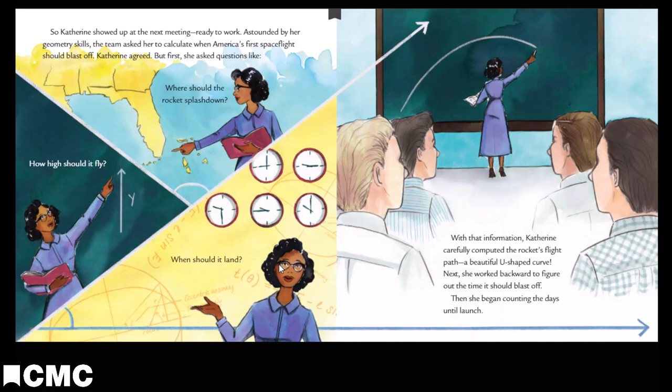Astounded by her geometry skills, the team asked her to calculate when America's first spaceflight should blast off. Catherine agreed. But first, she asked questions like, where should the rocket splash down? How high should it fly? When should it land? With that information, Catherine carefully computed the rocket's flight path—a beautiful U-shaped curve. Next, she worked backwards to figure out the time it should blast off. Then she began counting the days until launch.